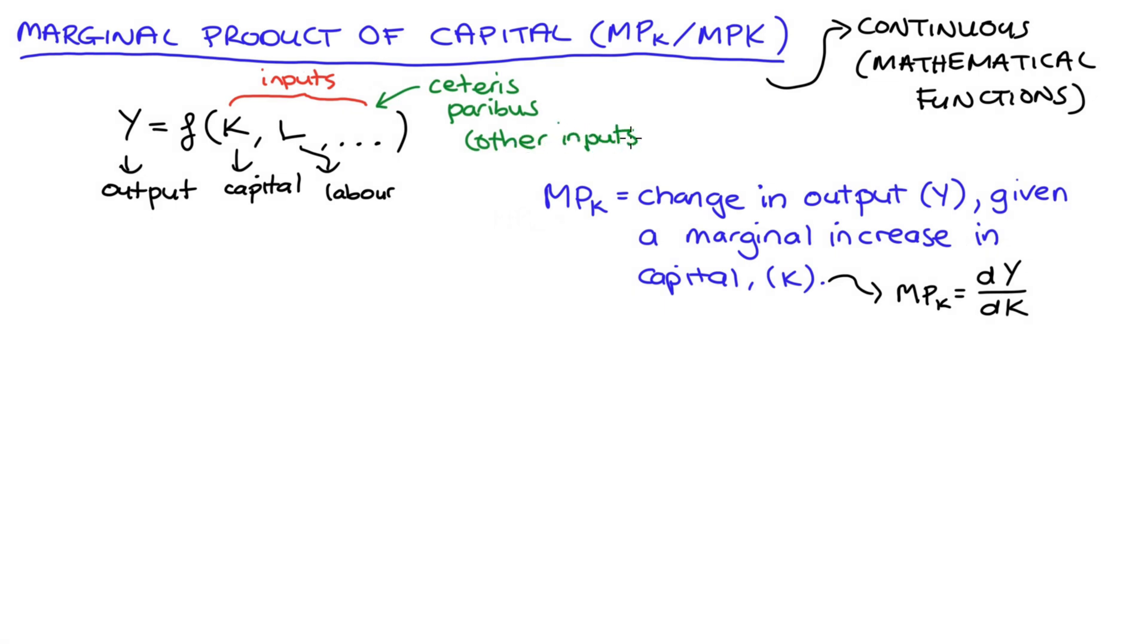So just as an example, let's take a production function of the form Y = K^α × L^β, where alpha and beta lie between zero and one. This is actually an example of what we call a Cobb-Douglas production function. It's a pretty common production function used in economics.